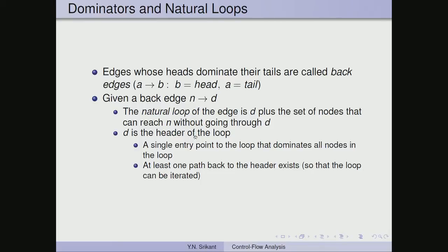The property of the header is that d is the header of the loop. It is a single entry point to the loop that dominates all the nodes in the loop, and at least one path back to the header exists so that the loop can be iterated.